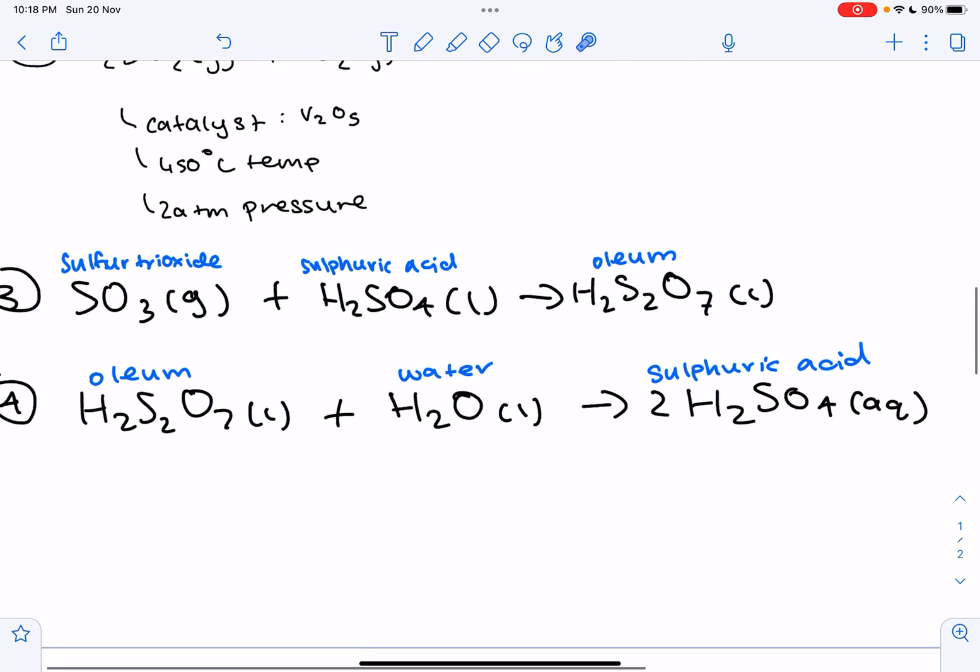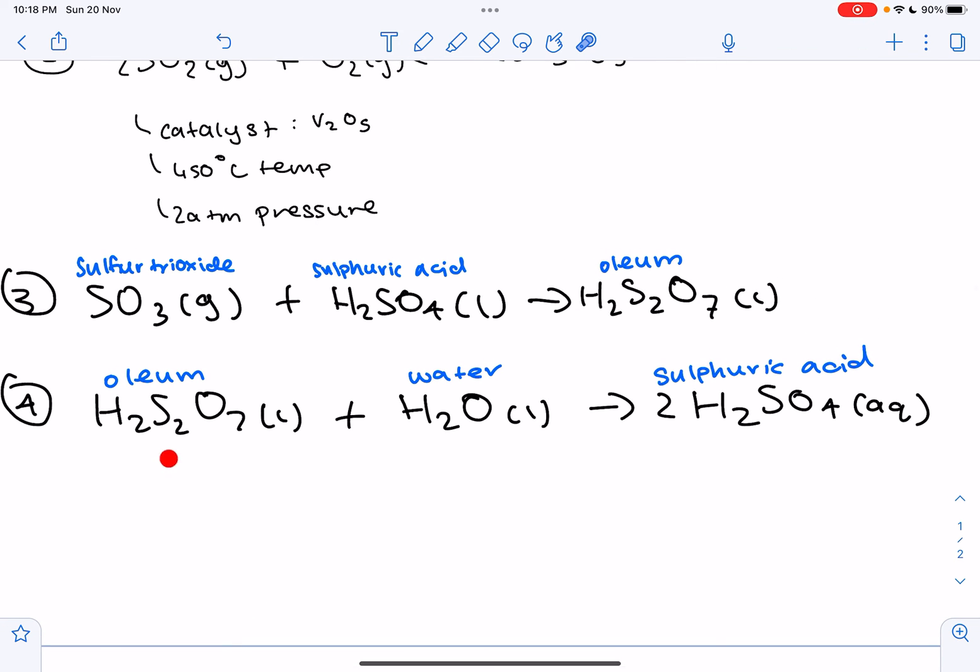So our last step would be, we have oleum, which is from, again, step three, plus water, gives us sulfuric acid. So why did we add the sulfuric acid earlier and then get oleum? So the direct addition of sulfur trioxide to water is extremely exothermic and dangerous because it may lead to formation of clouds of sulfuric acid. Therefore, we use oleum to minimize this risk.